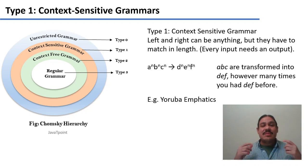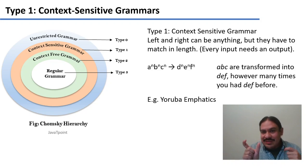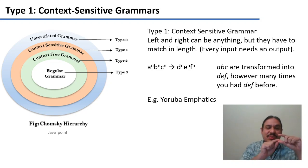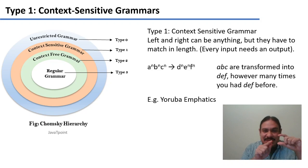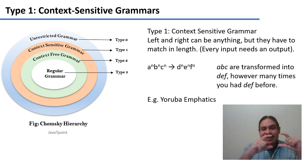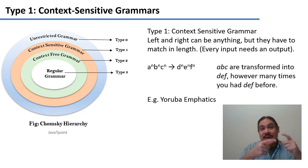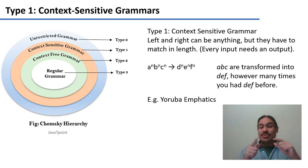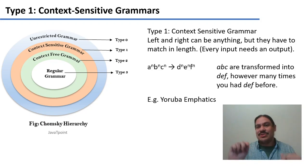We call it context-sensitive because in order for you to know what D, E, F is, you need to read some things about A, B, C. And in order for you to know how A, B, and C are going to interact, you need to actually look at them — to look at the sounds before and after you.